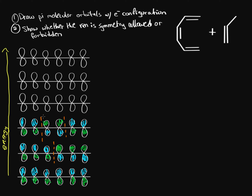The next higher energy orbital has three nodes. I split them to the right and left, moving where they sit, so we have a node here, a node here, and a node here. Drawing the phases, it looks something like this, where we have up to three anti-bonding interactions, with the green phases positioned here.